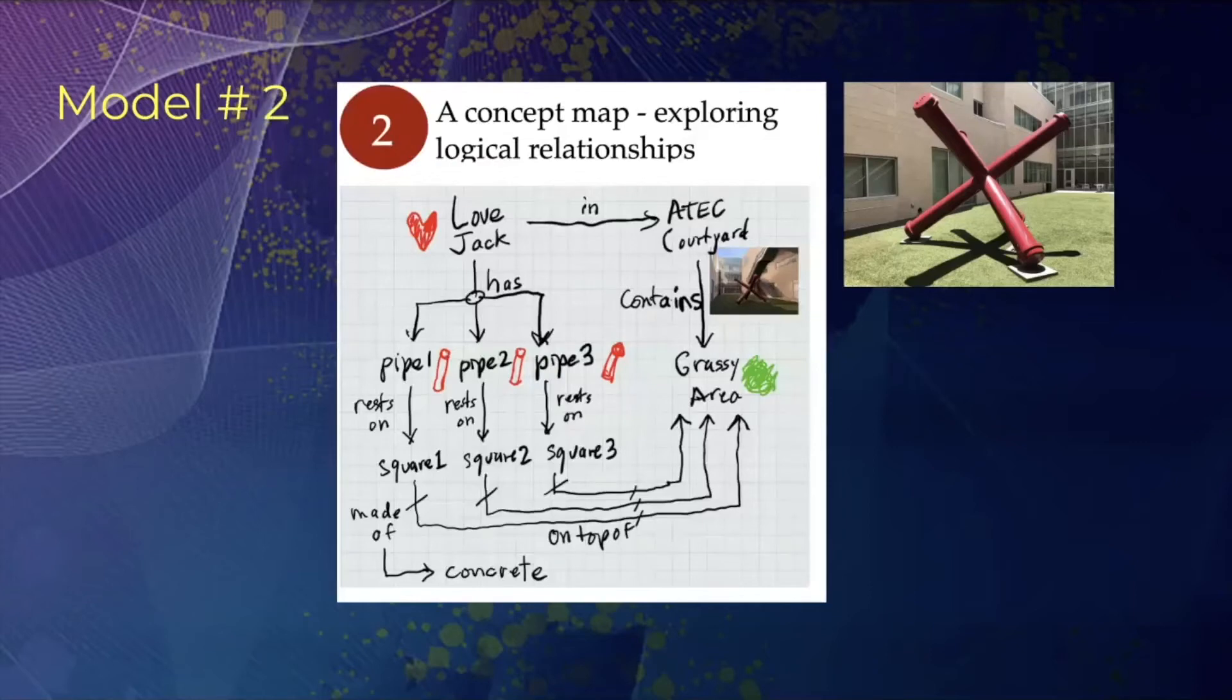Another way you've already seen this concept map. Remember, we saw the concept map for the tree saying trees have parts and branches are some of those parts. Well, this is a concept map of the love jack. So in the top left, we have the love jack. That's the name of the sculpture. What does it have? It has three pipes. Each pipe rests on a square. So I'm sort of taking this diagram and looking at it from upper left to lower left. And then each square is made of concrete, but it's also on top of a grassy area, which is the ATEC Courtyard. And the ATEC Courtyard contains the grassy area. So this is a second example of a concept map.